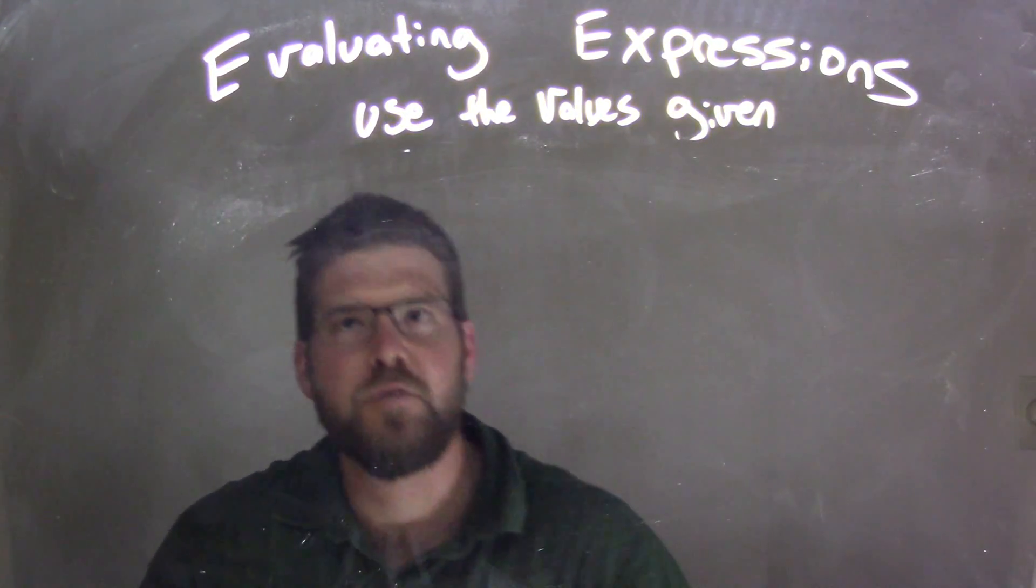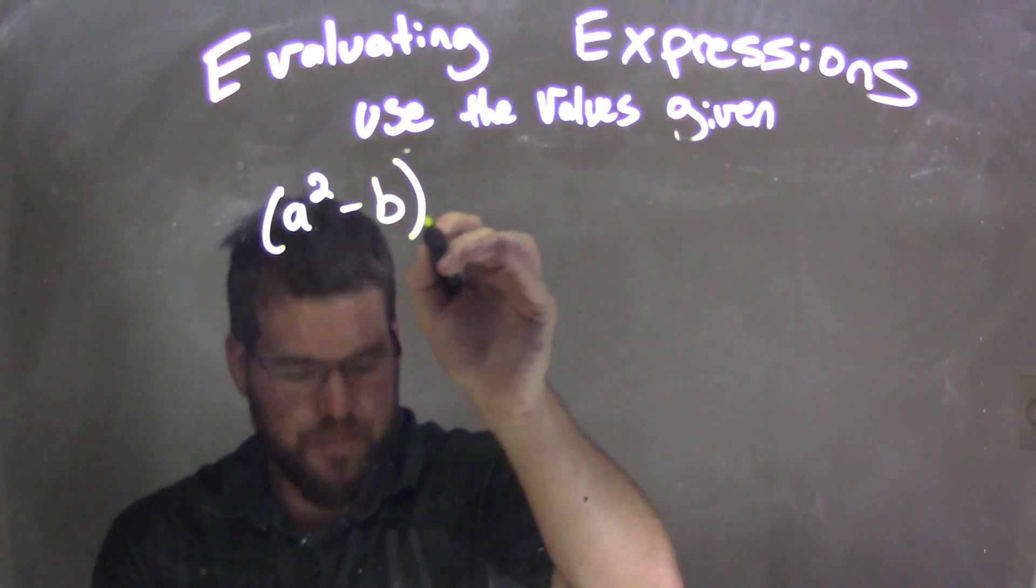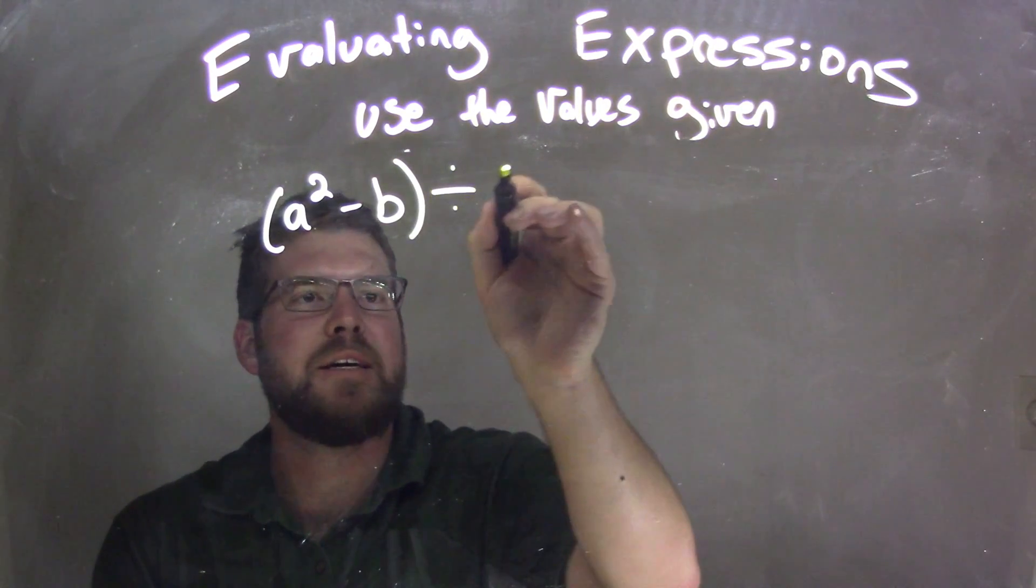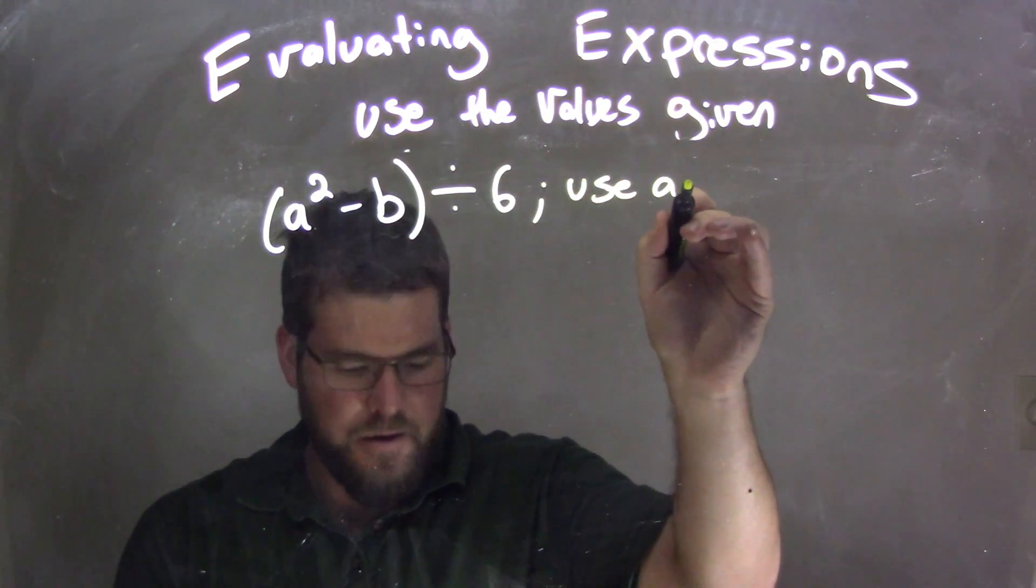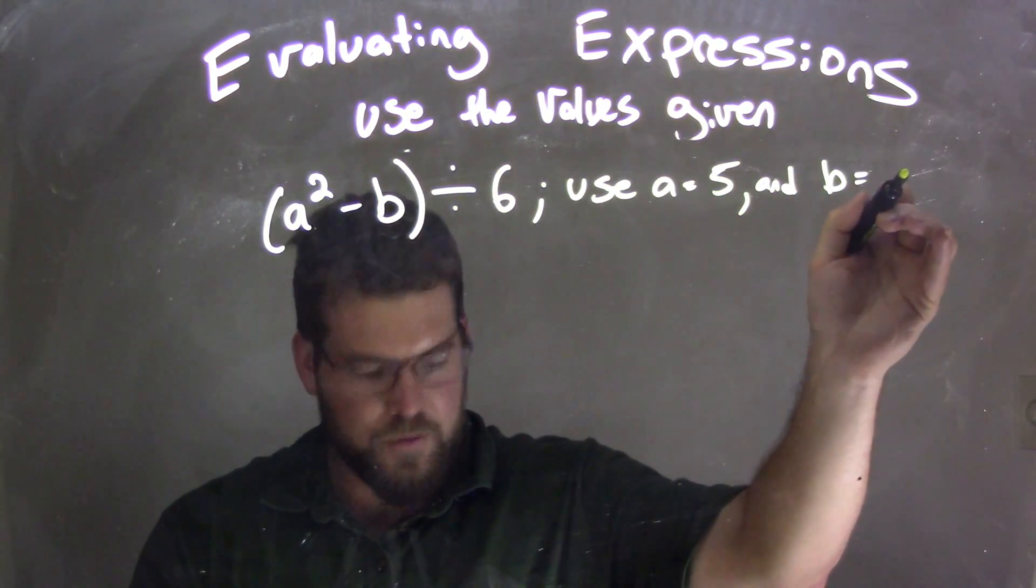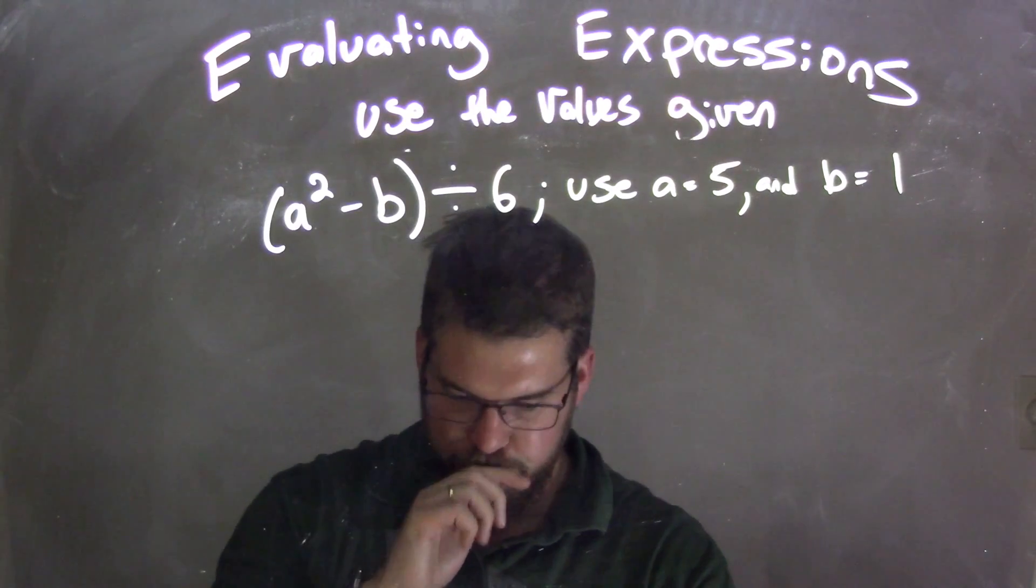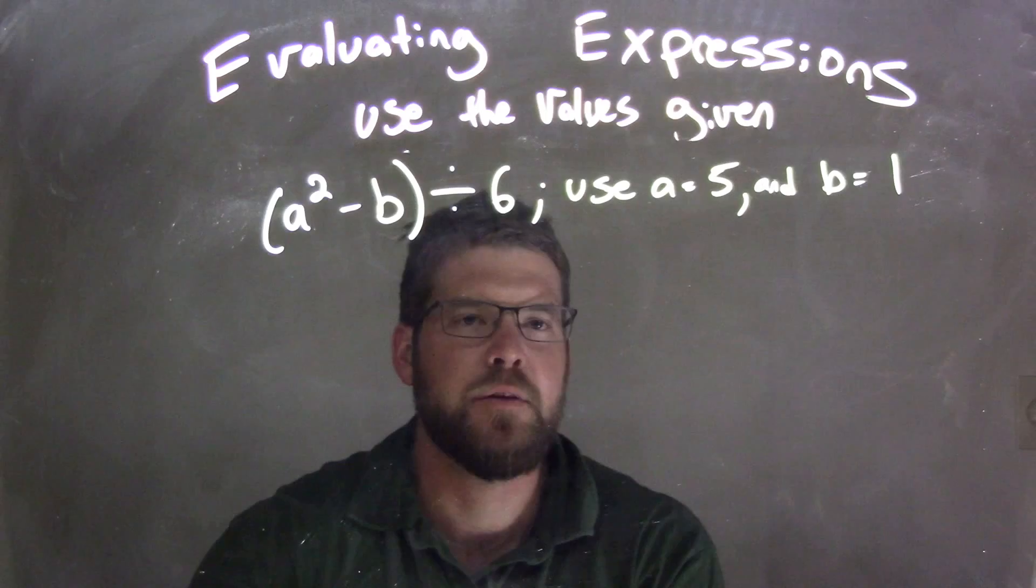So if I was given this expression a squared minus b divided by 6, and we're using a equals 5 and b equals 1. Okay, so a squared minus b divided by 6, and we're using a as 5 and b as 1.